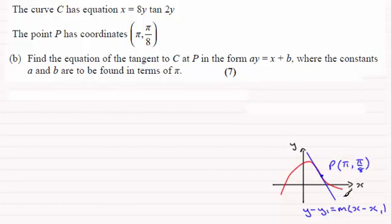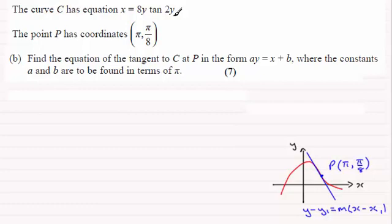So we're going to need to differentiate our curve — find dy/dx. The first thing that strikes me is that it's x in terms of y rather than y in terms of x. We could try to make y the subject but that would be virtually impossible. So what I'm going to do is find dx/dy and then take the reciprocal of that to get dy/dx, substitute our values in to get the gradient, then substitute it into the tangent form.